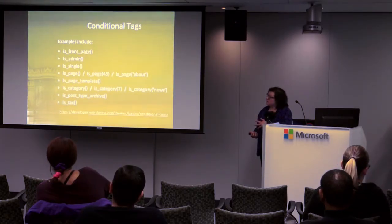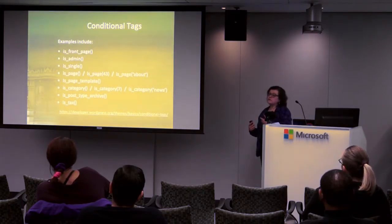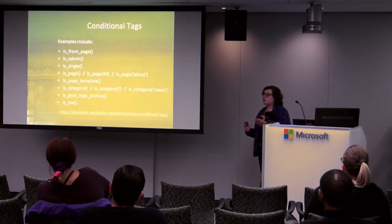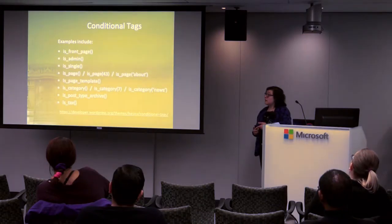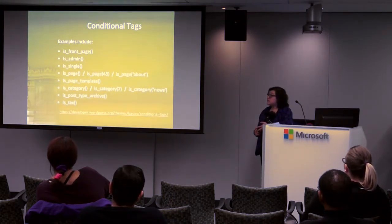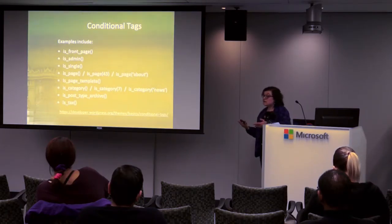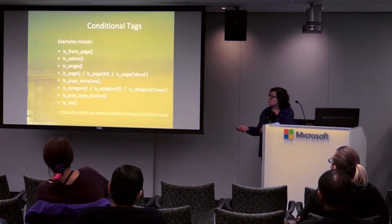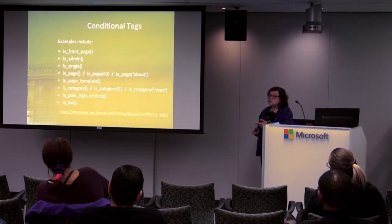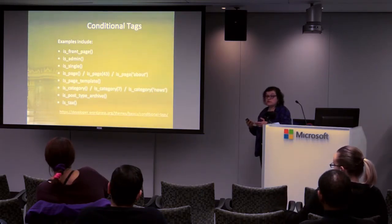WordPress has conditional tags — basically a bunch of Boolean functions that tell you things about what page you're on and what type of content you're looking at. Common examples: is_front_page() tells you if you're on a page that's the front of your blog. is_admin() tells you if you're in the admin area. is_single() tells you if you're on a single piece of content versus an archive or taxonomy page. is_page() can be called by itself or with a page ID or page name — allowing you to do something a little different if you only have a minor variation without creating a whole new template.